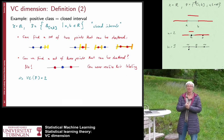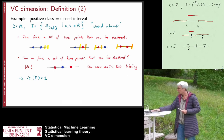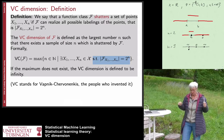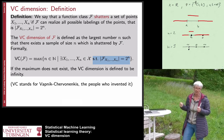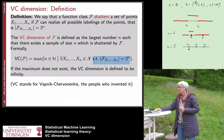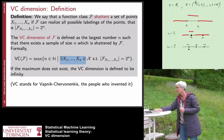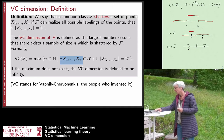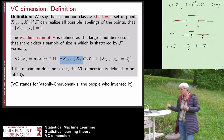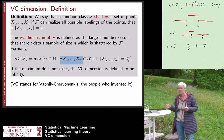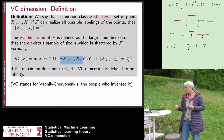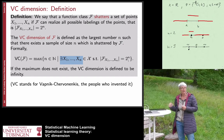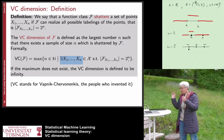Now we can stop and say the VC dimension is two. Going back to the definition: we look for the maximum n such that there exists a dataset that can be shattered. For n=3, no matter how you place three points on the real line, you will never be able to shatter it. For all datasets of size three we cannot shatter them, so the VC dimension is two.